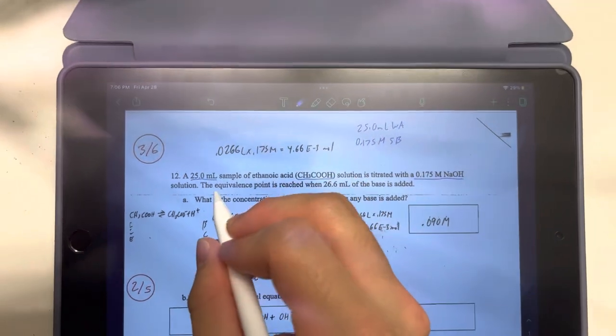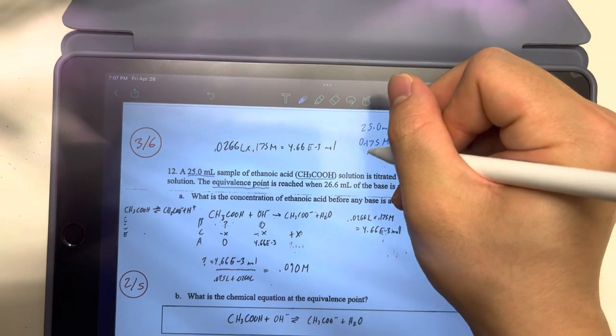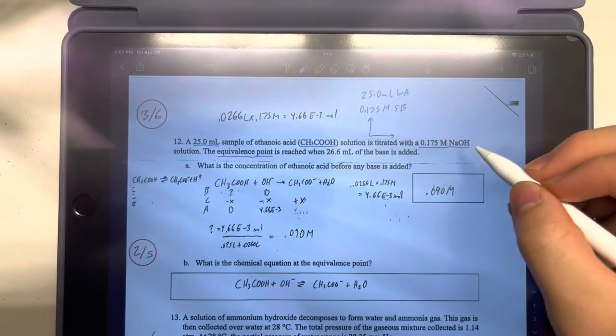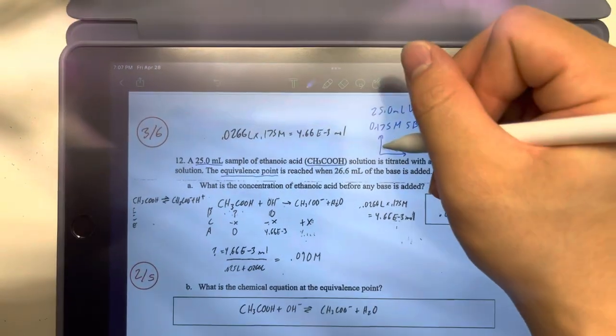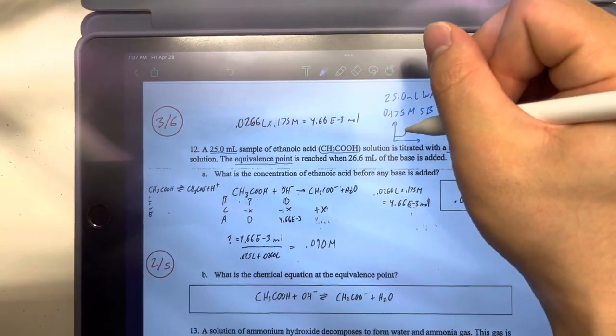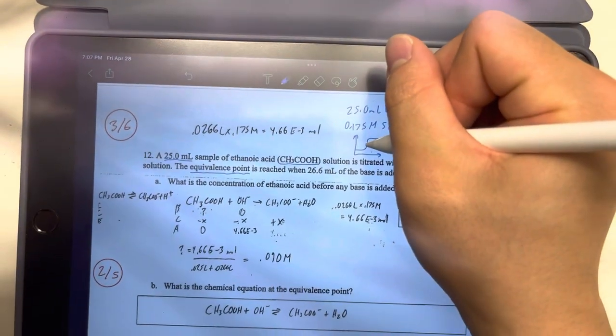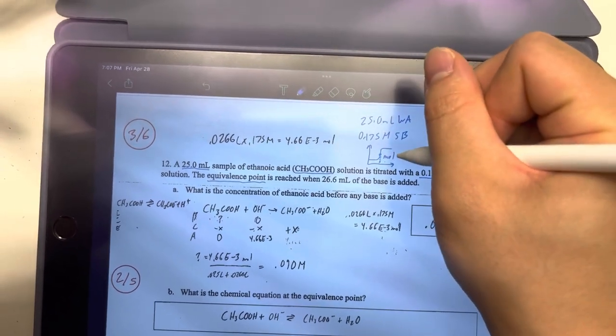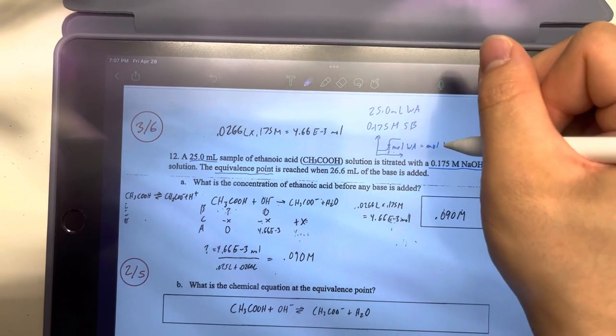The second part is the equivalence point. So what does the equivalence point mean in a titration? We can actually draw it out. Since we're adding strong base, we know that the pH will be increasing as the titration goes on. So it'll look something like this. And the equivalence point, as we know from lecture, will be right here. And this is where we know that the moles of weak acid equal the moles of strong base.